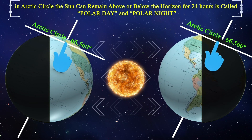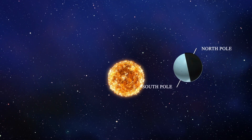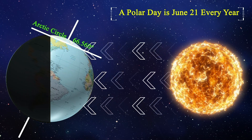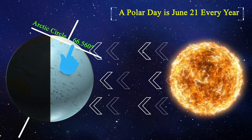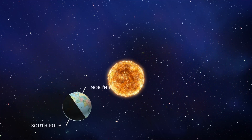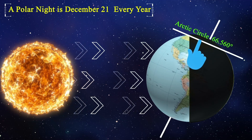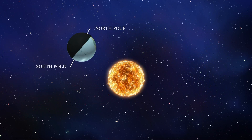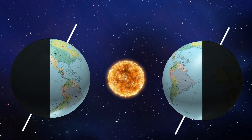In the Arctic Circle, the sun can remain above or below the horizon for 24 hours — this is called Polar Day and Polar Night. A Polar Day is 24 hours of continuous daylight and occurs June 21st every year. It is also called the Midnight Sun. Polar Night is 24 hours of darkness and occurs December 21st every year.